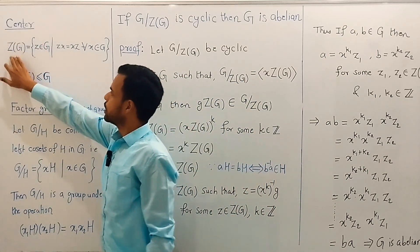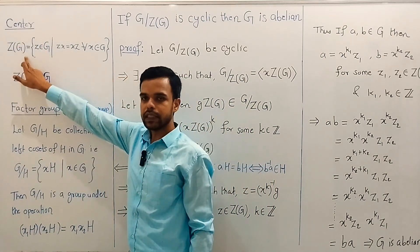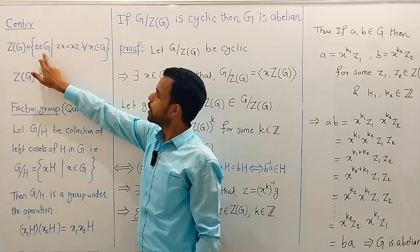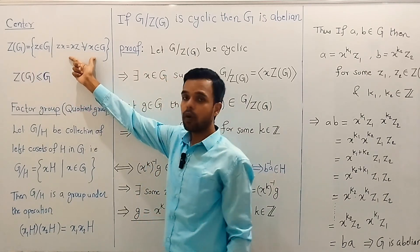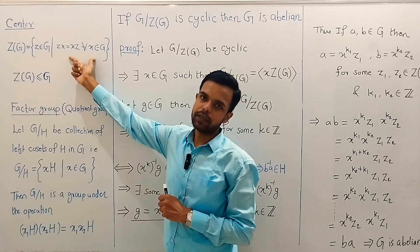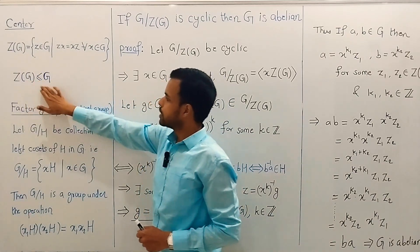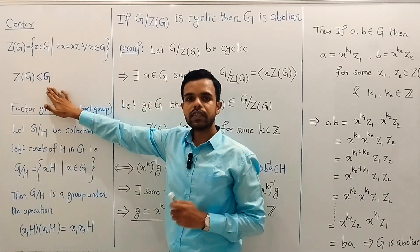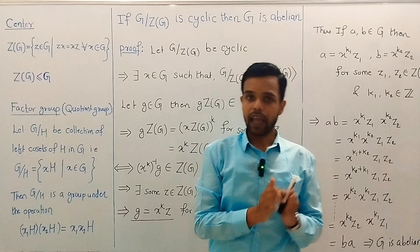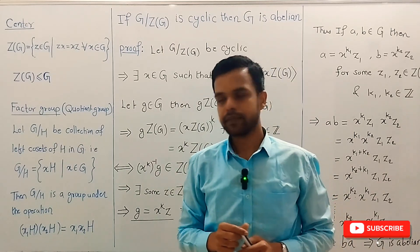The center of group G, denoted Z(G), is the set of all those elements in group G which commute with every element of group G. We can easily prove that the center of group G is a subgroup of group G. In fact, the center is an abelian, that is commutative, subgroup of group G.